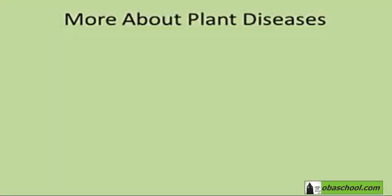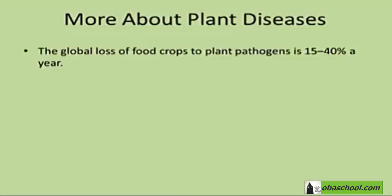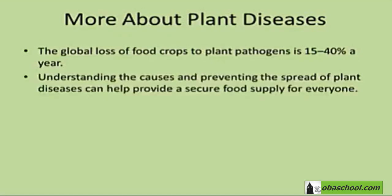More about plant diseases. The global loss of food crops to plant pathogens is 15 to 40 percent a year. Understanding the causes and preventing the spread of plant diseases can help provide a secure food supply for everyone.